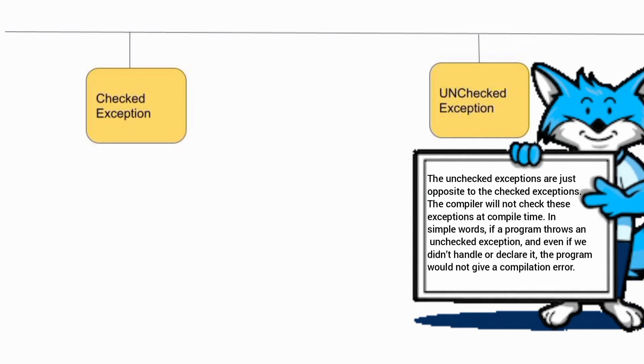In simple words, if a program throws an unchecked exception and even if we didn't handle or declare it, the program would not give a compilation error. Unchecked exceptions are not checked at compile time but they are checked at runtime.